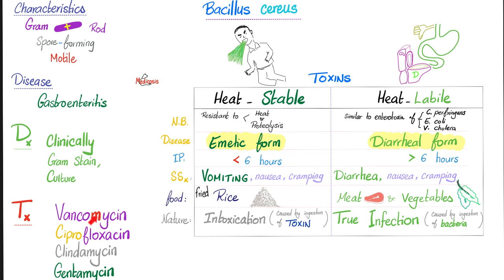Management: vancomycin, ciprofloxacin, clindamycin, or gentamycin — these are for the severe infections like endophthalmitis. But for the diarrhea and vomiting, it's self-limiting. Just conservative management — give the patient what they need. Need fluid? Give them fluid.